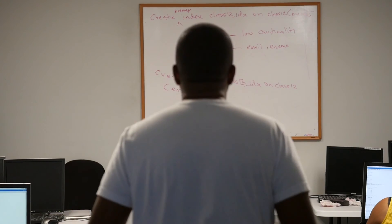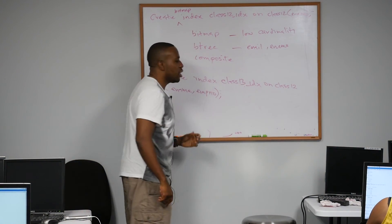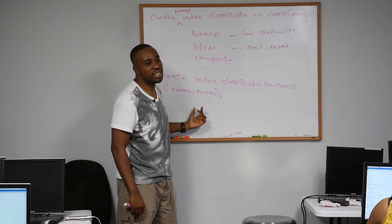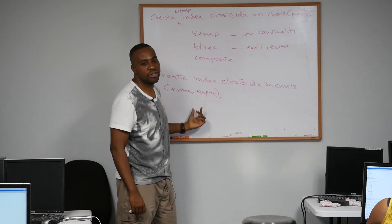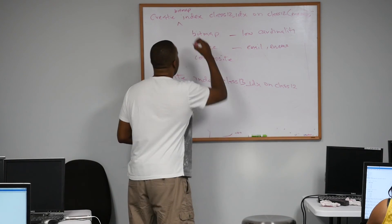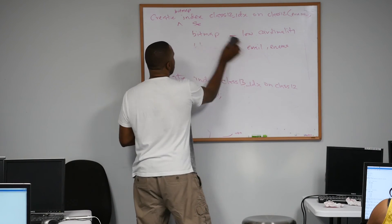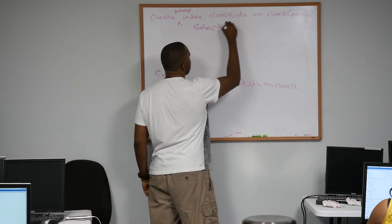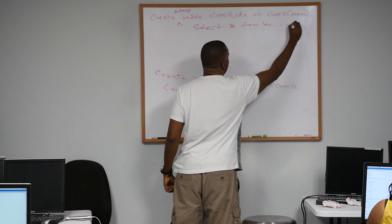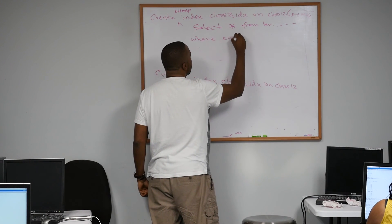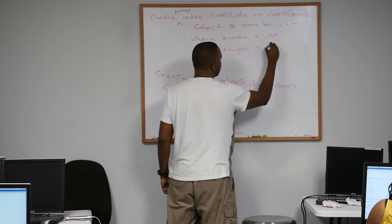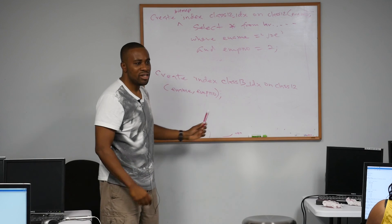This is a composite index. If you give me exactly 60 seconds, I'm done. SELECT * FROM HR.employees WHERE ename equals 'Joe' AND empno equals 2. Watch this — this query uses both columns in the WHERE clause, so having a composite index on both ename and empno will speed it up. That's a composite index.